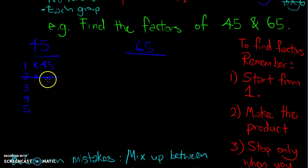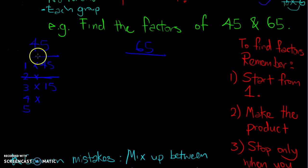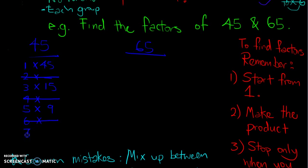Remember, there cannot be a remainder. For 3: 45 divided by 3 gives 15, so 3 times 15 equals 45 — 3 and 15 are factors. Your multiplication knowledge needs to be strong for this chapter. For 4: dividing gives a remainder, so 4 is not a factor. For 5: 5 multiplied by 9 gives 45, so 5 and 9 are factors.